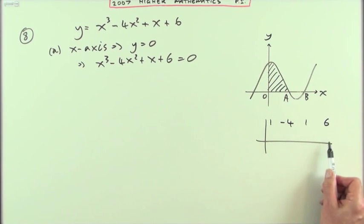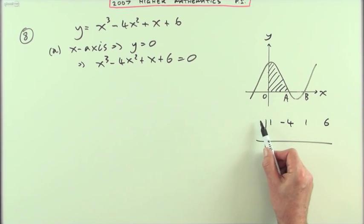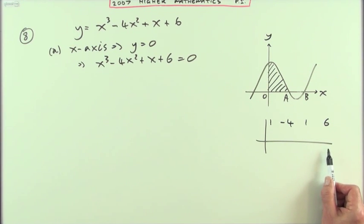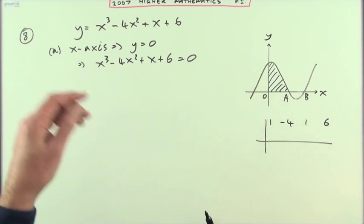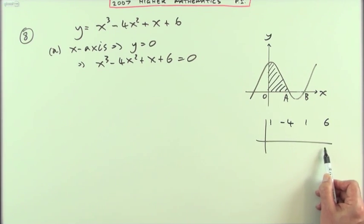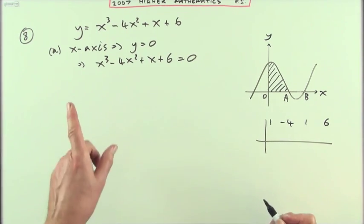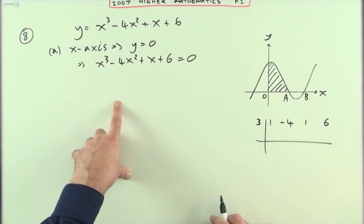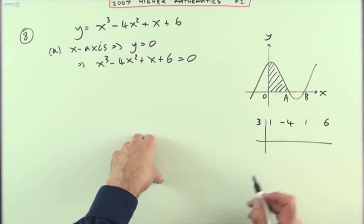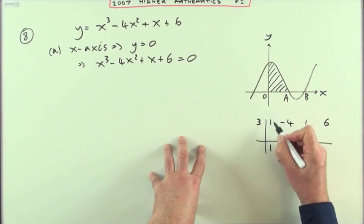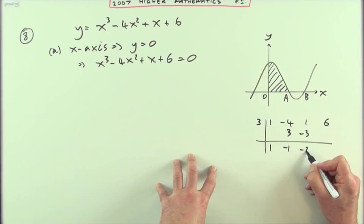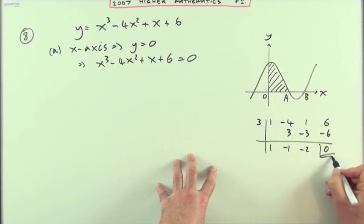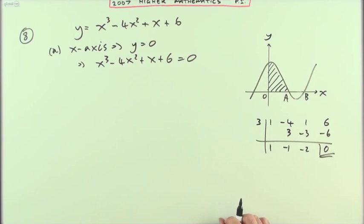You can use it as a division to find if you've got a factor because the number at the end will be the remainder, but it also evaluates the expression at the same time. If I want to know the value of this expression at any number, put that number in here and the answer at the end will be the value. Add down, multiply up, add down, multiply up, add down, multiply up, and there it is: you get an answer of zero. Now it's a case of interpretation here.